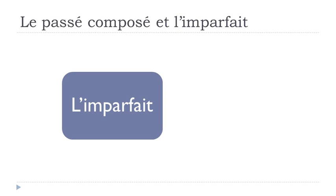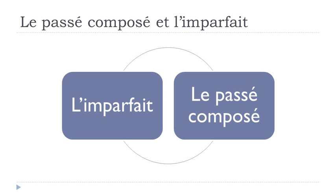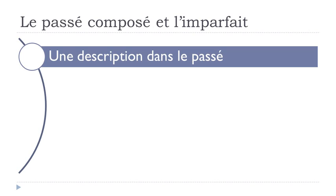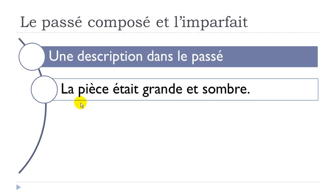So let's start now. First I will focus on l'imparfait — when should we use l'imparfait — and then le passé composé. The first thing: l'imparfait. Remember that you use it when you want to describe something in the past. The example I took: 'la pièce était grande et sombre' — the room was big and dark. In that case, you use être, to be, at the imparfait form to make this description.